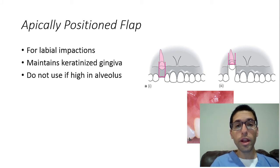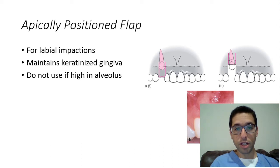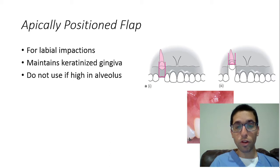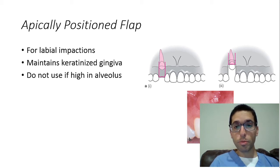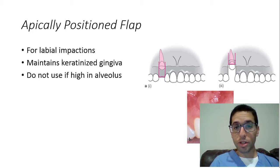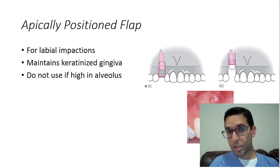When an oral surgeon encounters these teeth, we have three options for how to expose and bond. Expose and bond means you expose by removing the soft tissue and bone overlying the impacted tooth — specifically the crown only. You do not want to expose the CEJ or the root. Then you bond a bracket so it can be pulled into proper position. After you flap it, you have three decisions of how to close: leave the flap open, leave the flap closed, or apically reposition the flap.